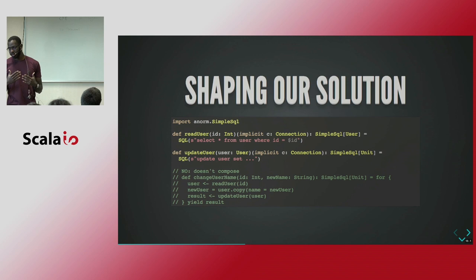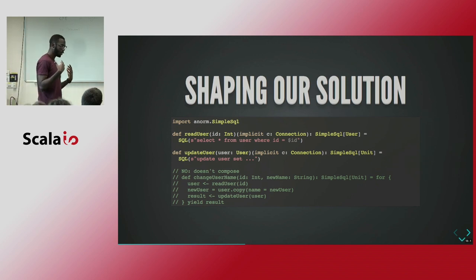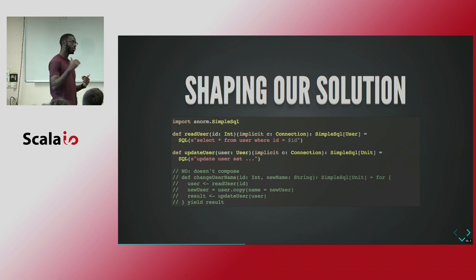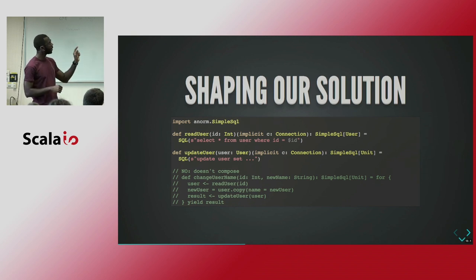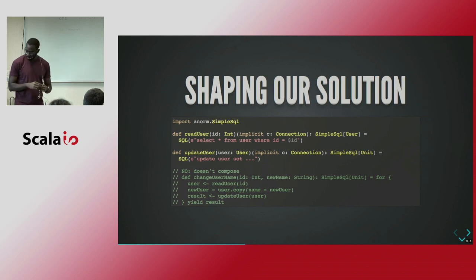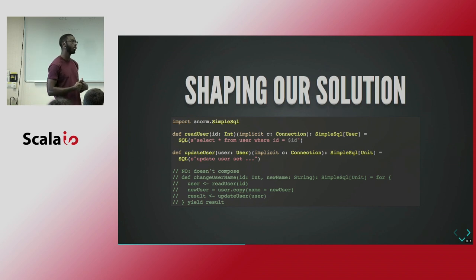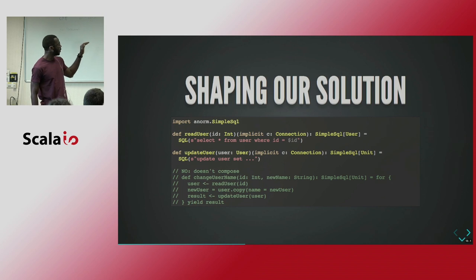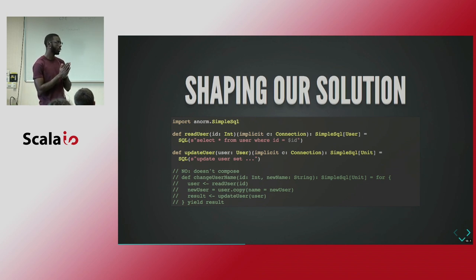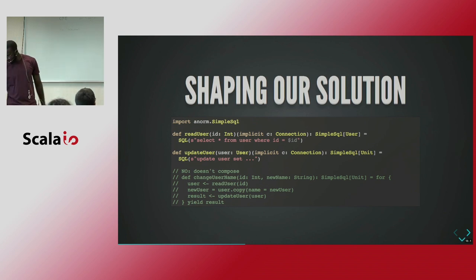We could now start to think about how we could implement our type. The first thing we could think about is: instead of calling the 'as' method on the Anorm SimpleSql component right away, we could just pass the query to the Anorm SQL component, keep the SimpleSql type to represent our operation, and then when we want the result, call the 'as' method on it. This is fine, but what we want is to compose. And that type — SimpleSql — does not have the flatMap method on it. So if we define our readUser as a SimpleSql of User and the updateUser as a SimpleSql of Unit, we cannot define changeUserName with a single for comprehension. So we need to do better than that.